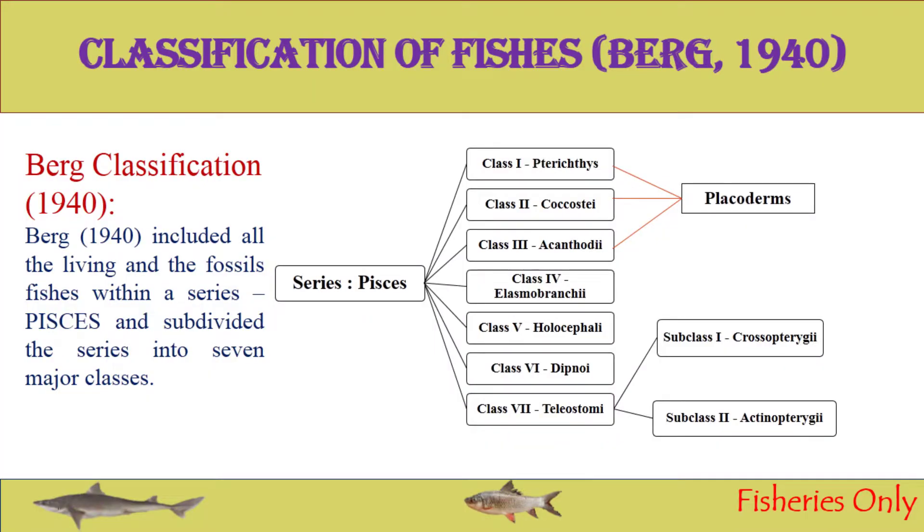The first class is Pterichthys, the second is Coccosteus, and the third is Acanthodii. These first three classes — Pterichthys, Coccosteus, and Acanthodii — are collectively called Placoderms. These fishes are mostly extinct, present only in fossil form, and their bodies are covered by hard plates instead of scales.